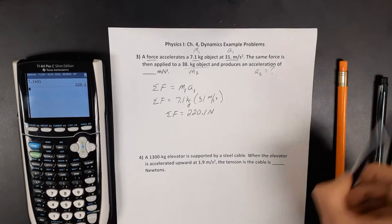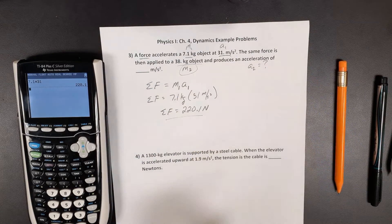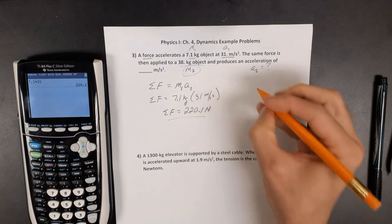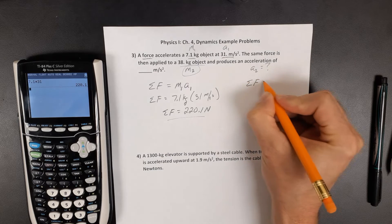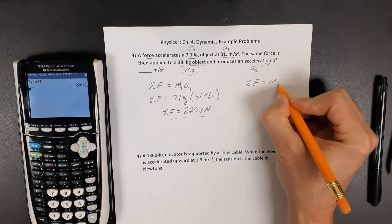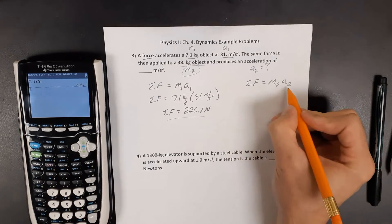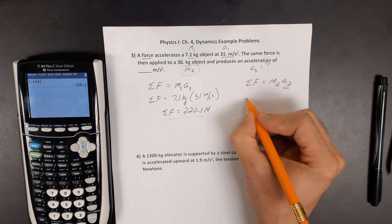Alright, but now that same force is being applied to the second object here as well. So now for the second object, the net force equals that object's mass times its acceleration. Well, that's the part we don't know—what is the acceleration of object number 2.